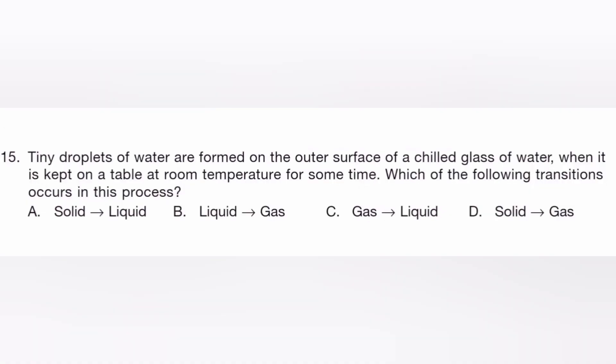Tiny droplets of water are formed on the outer surface of a chilled glass of water when it is kept on the table at room temperature for some time. Which of the following transitions occur in this process? Solid to liquid, liquid to gas, gas to liquid, solid to gas. The answer is C, gas to liquid.